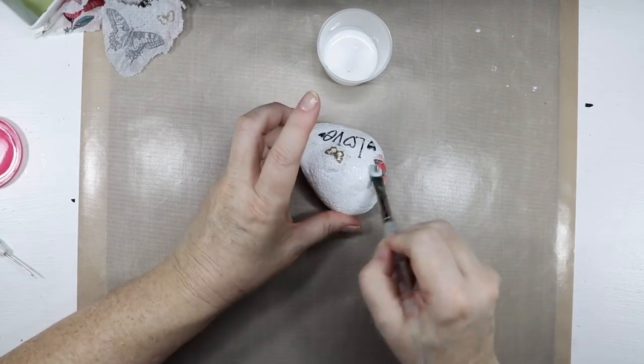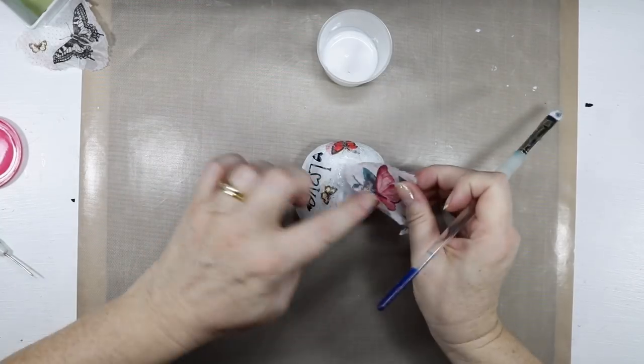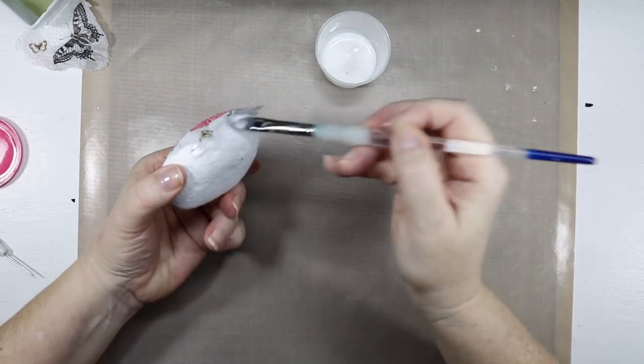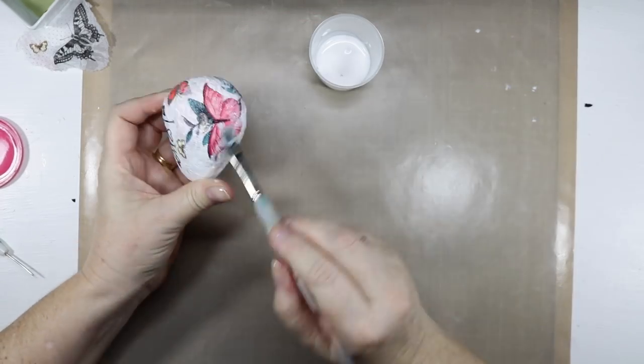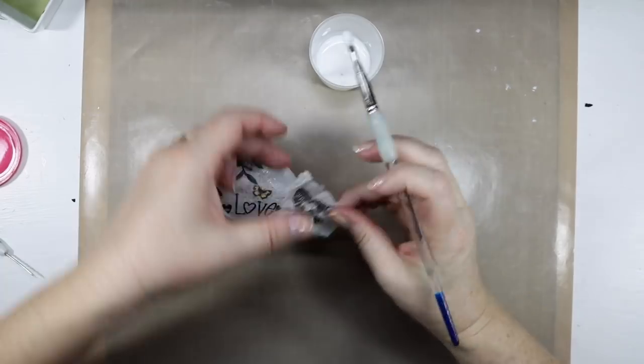Now I'm not sure if you can see but why I use a wet brush to pull the butterflies away on the napkin is you don't get harsh lines and the butterflies sort of look to be part of the rock and that's what I'm looking for.